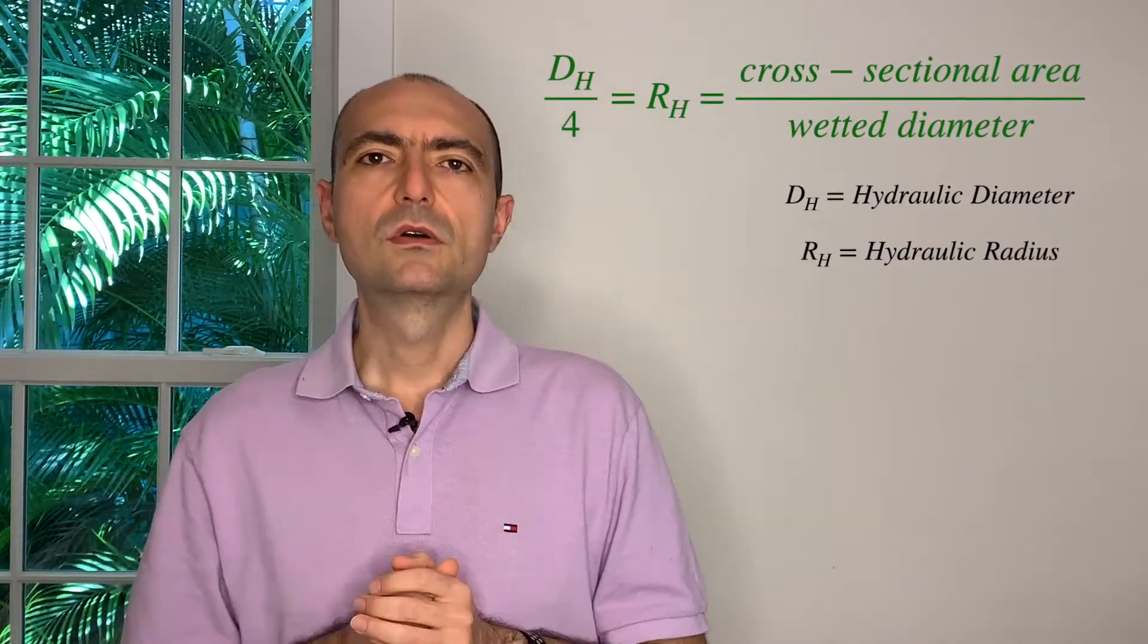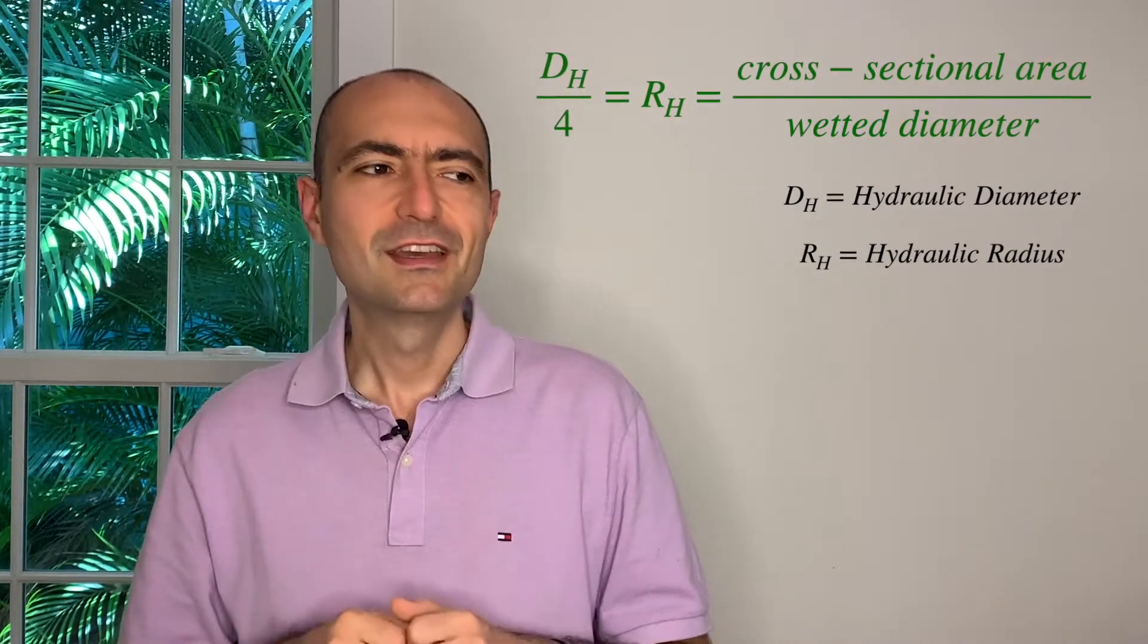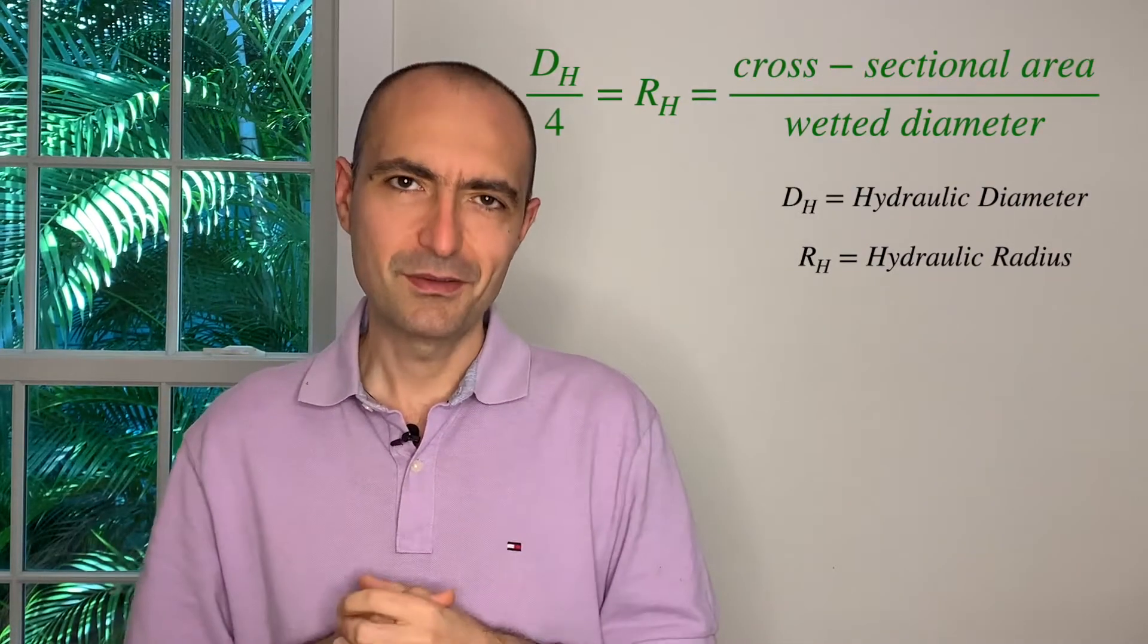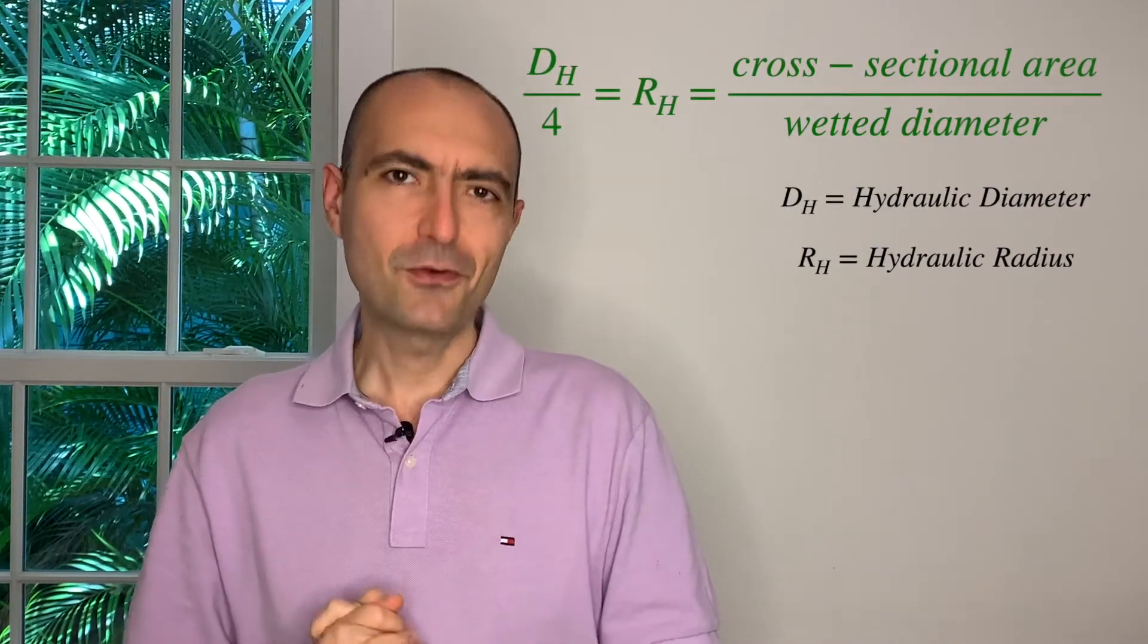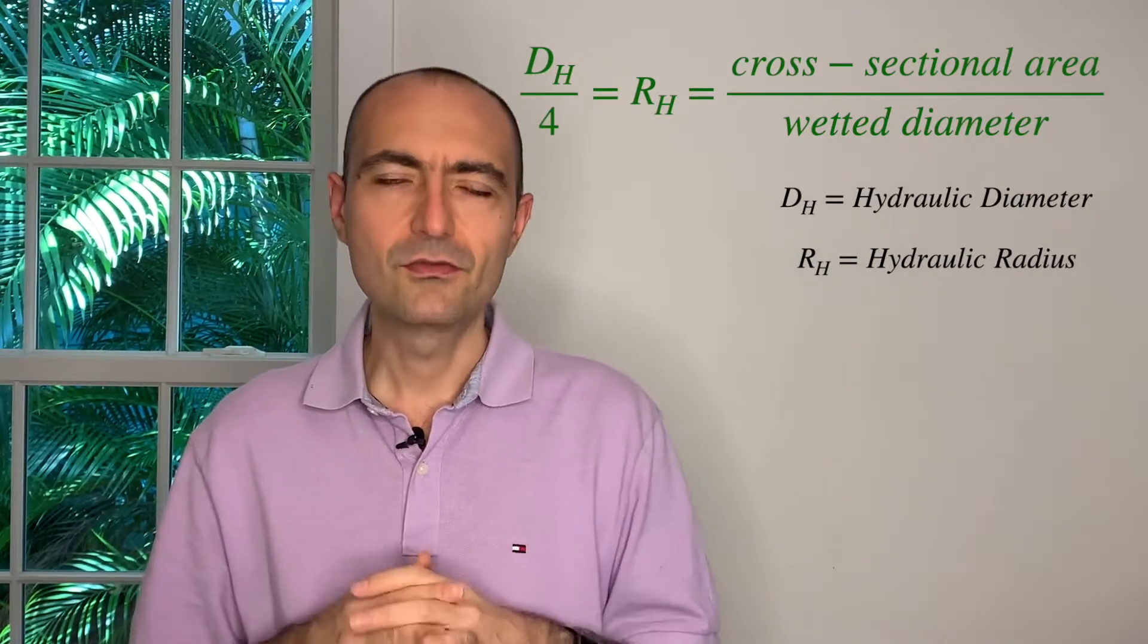The FE manual also has hydraulic radius. One thing, kind of, be careful is, hydraulic radius is not half of the hydraulic diameter. It is actually one-fourth, and in my lecture video, I show you why it is a four. It's beyond the scope for an FE exam review.